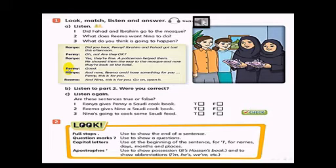Did you hear, Penny? Ibrahim and Fahad got lost this afternoon. Oh, no. Are they okay? Yes, they're fine. A policeman helped them. He showed them the way to the mosque and now they're back at the hotel. Well, good. And now, Rima and I have something for you, Penny. This is for you. And Nina, this is for you. Go on, open it.